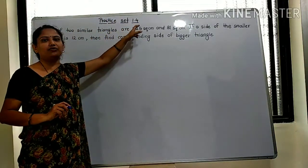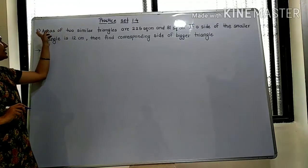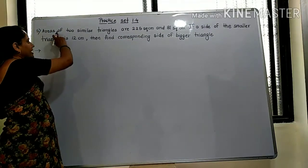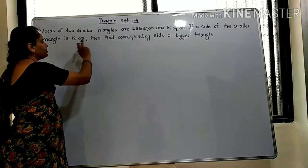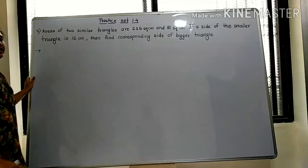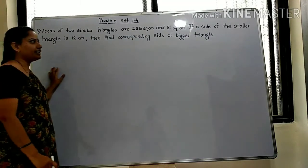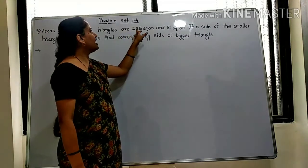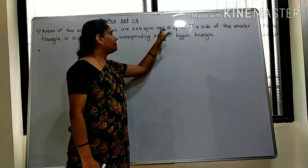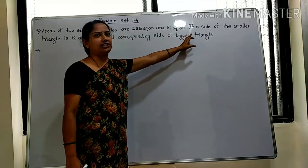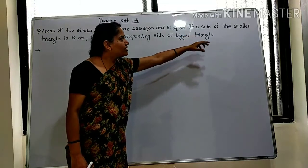Now for Practice Set 1.4, we'll look at the 5th example. Areas of 2 similar triangles - when 2 triangles are similar, their areas are given as 25 square centimeters and 81 square centimeters. If a side